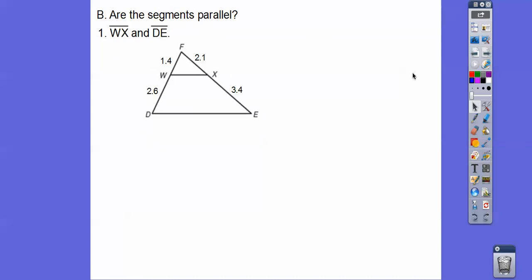Are these segments parallel? They are parallel if top over bottom equals top over bottom. So set that up and see if they are. And then cross multiply. And if they're equal, then yes, they're parallel. If they're not equal, those lines are not parallel.